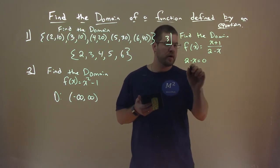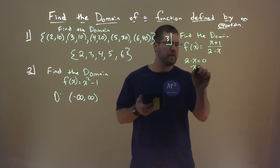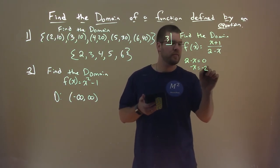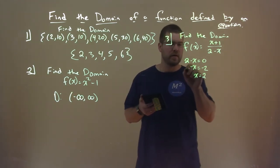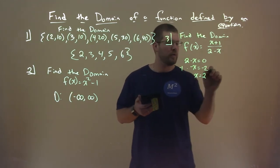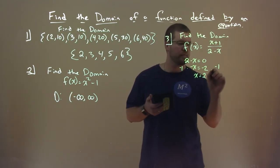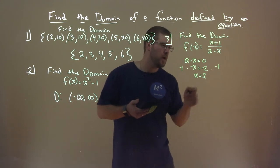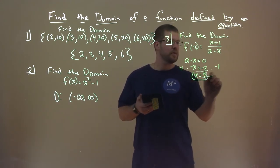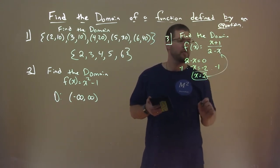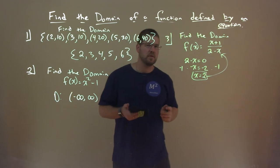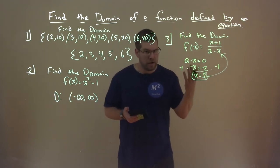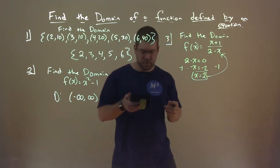Subtract 2 from both sides: negative X equals negative 2. Multiply both sides by negative 1: X equals positive 2. So if we plug 2 into our function, we get a denominator of 0, and we can't have that.